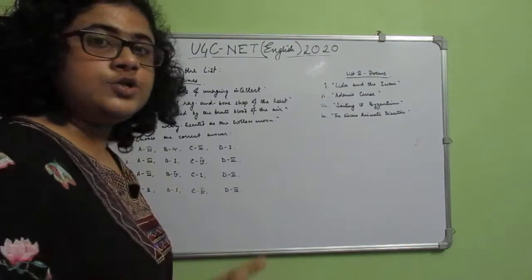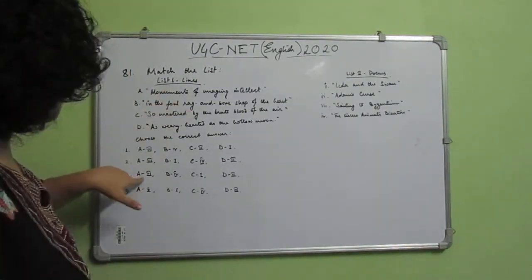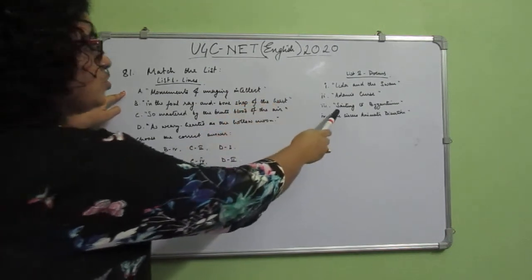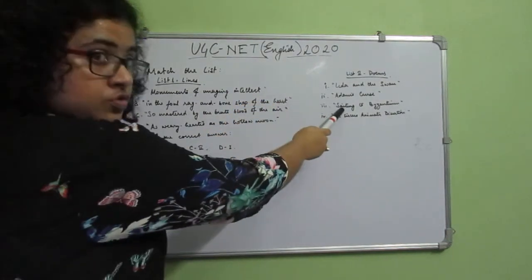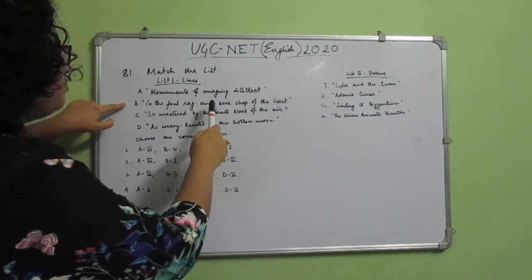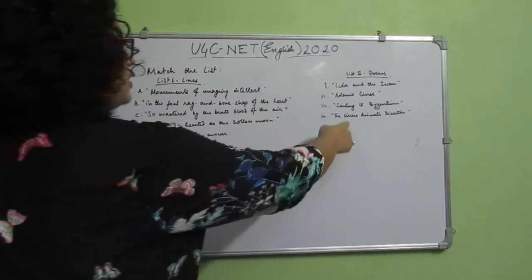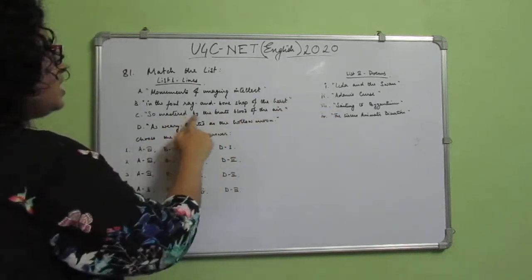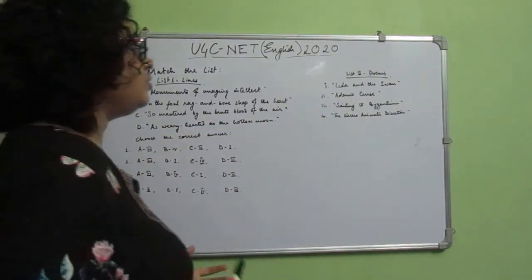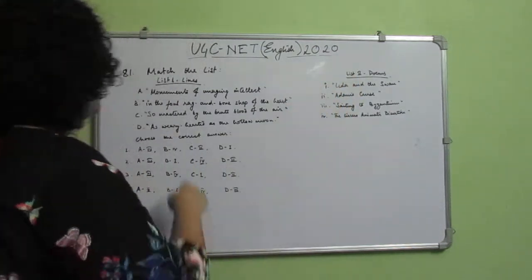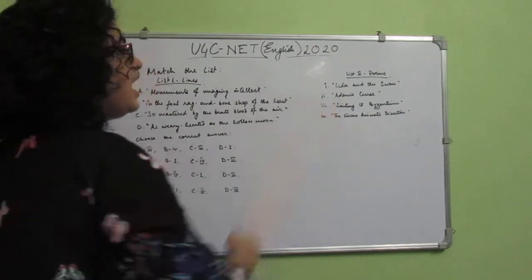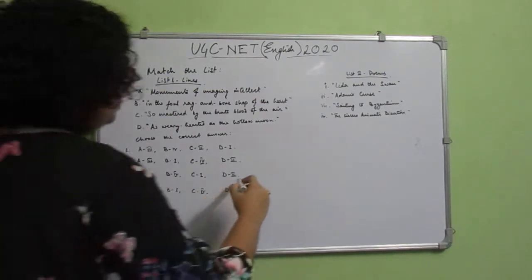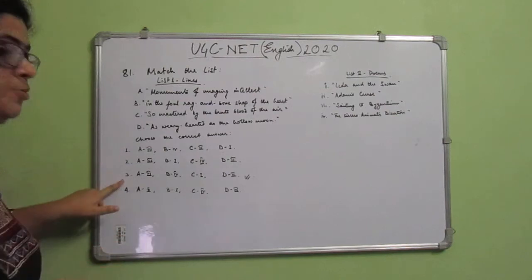The correct combination is option number 3. A — 'Monuments of Unaging Intellect' goes with Sailing to Byzantium, so A3. B — 'In the Foul Rag and Bone Shop of the Heart' goes with The Circus Animals' Desertion, so B4. C — 'So Mastered by the Brute Blood of the Air' goes with Leda and the Swan, so C1. D — 'As Very-Hearted as the Hollow Moon' goes with Adam's Curse, so D2. Option number 3 is the correct answer.